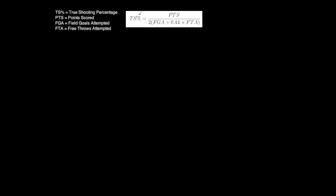I grabbed this formula from Wikipedia for true shooting percentage. TS% equals points scored divided by two times the quantity field goals attempted plus 0.44 times free throws attempted. It's pretty straightforward if you want to plug in numbers, but I wanted to break it up and see what it means.